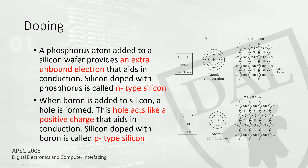There are two materials that are often doped with semiconductor devices. One is phosphorus and the other is boron. Phosphorus is a pentavalent atom, which means it has five valence electrons on the outermost shell. Boron is a trivalent atom, which means it has three electrons in the outermost shell.